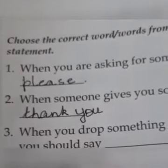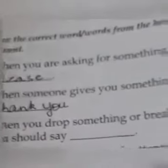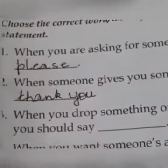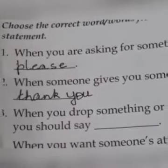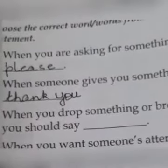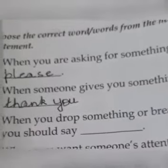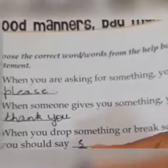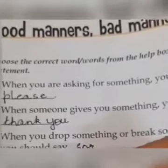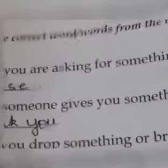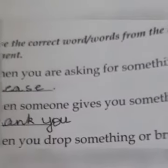Let's move to the third sentence: when you drop something or break something by mistake, you should say sorry. I'm sorry, I broke this thing, but it happened by mistake. So let's write down 'sorry': S-O double R-Y. Sorry. Done.